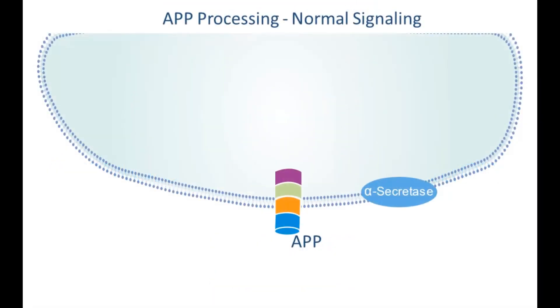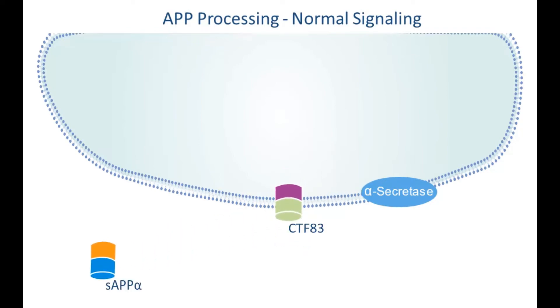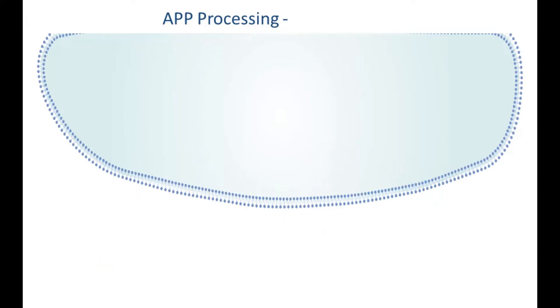In a normal brain, an enzyme called alpha secretase acts on APP and cleaves it into secreted APP alpha, also called SAPP alpha, and an 83 amino acid long membrane-bound C terminal fragment, called CTF83.